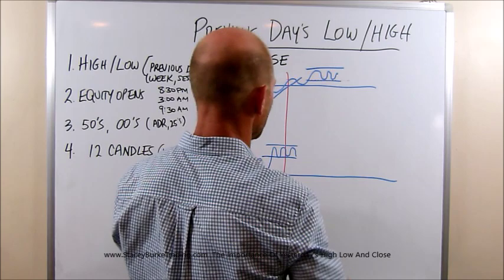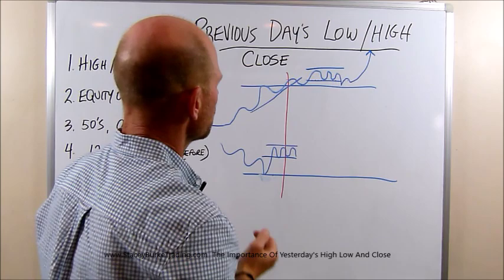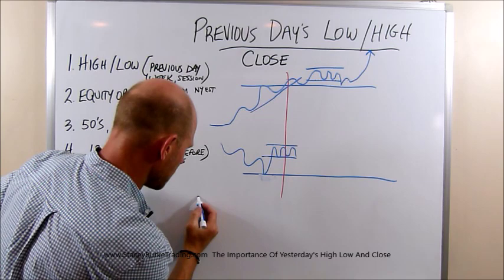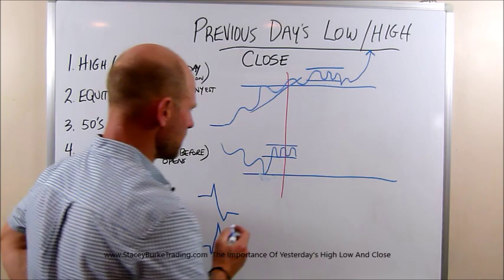Some traders will read that as the market taking out the high of the day and try to trade it short, when in reality it's a trend continuing back in the original direction. So it's important to look at the market. We talked about the typical day being: open, high, low, close — or the opposite: open, low, high, close consolidation. This is a normal trading day.